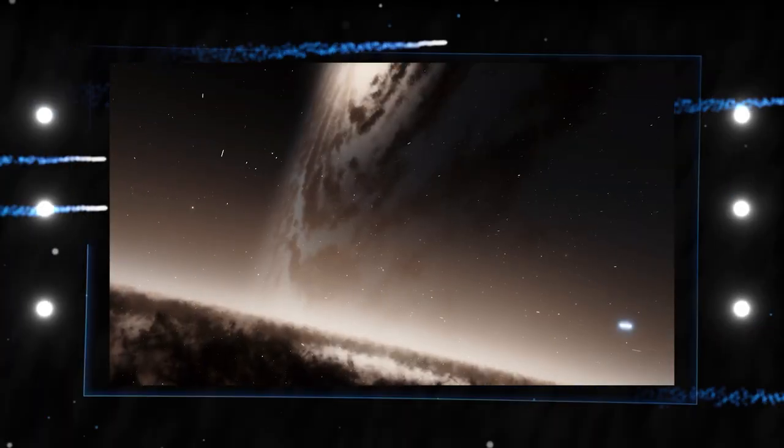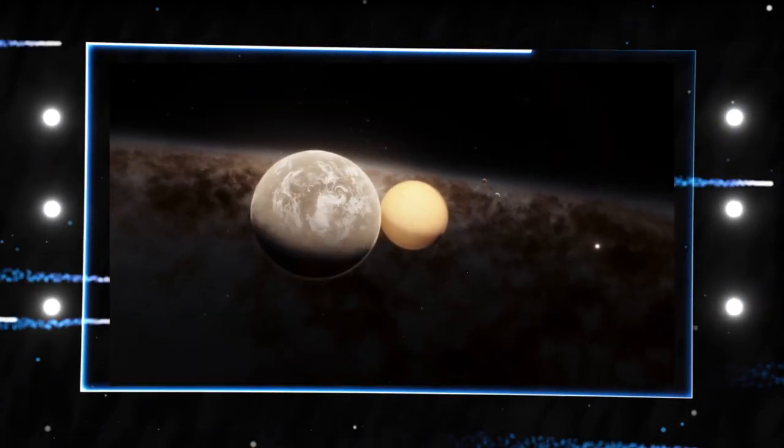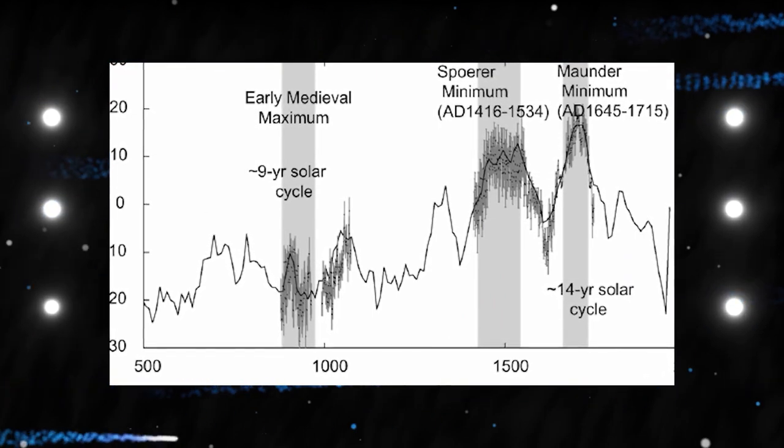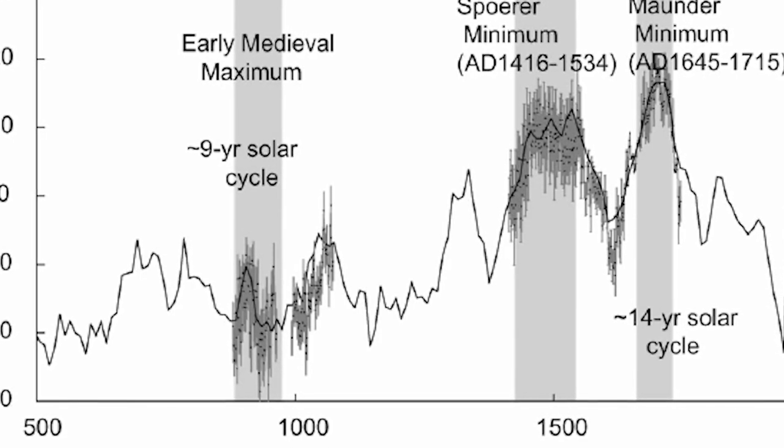When this occurs, the cosmic rays collide with an increasing number of atoms in our atmosphere, such as nitrogen and oxygen. This results in the formation of cosmogenic isotopes, such as carbon-14 and beryllium-10, which fall to the surface.